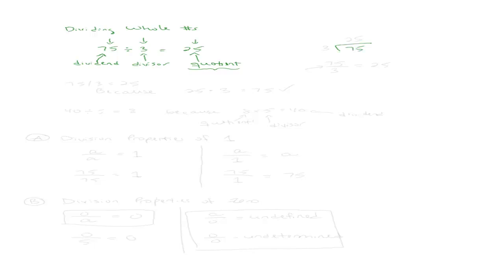I can write this same problem in a number of ways. I can write it as 75 divided by 3 gives me a quotient of 25. I can write 75 over 3 gives me a quotient of 25 — this bar is called a fraction bar, we'll talk more about that later. One more way: 75 divided by 3 equals 25. In all of these cases, the 75 is the dividend, the 3 is the divisor, and the 25 is the quotient.